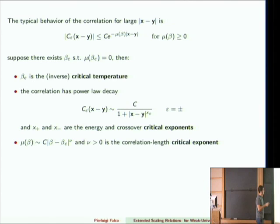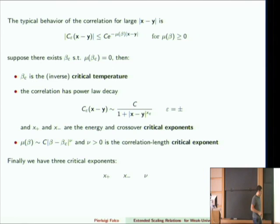To summarize: critical beta means the correlation does not decay exponentially but instead as a power law. The critical exponents are the exponents found in these decay formulas. We thus have three critical exponents: x plus (energy), x minus (crossover), and nu (inverse correlation length).